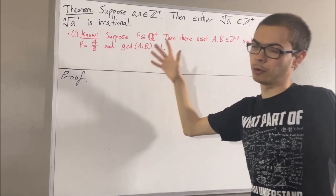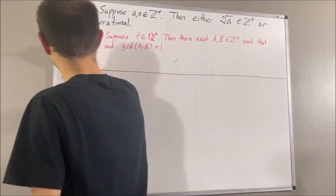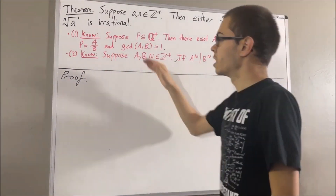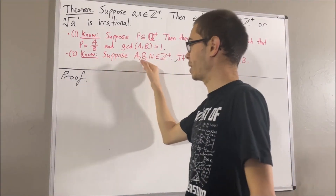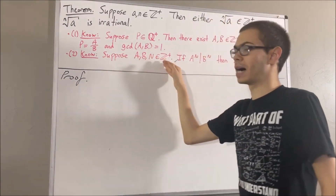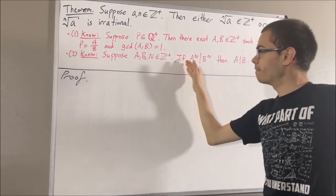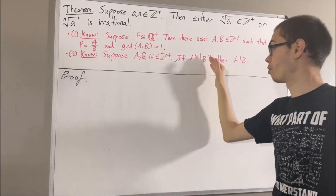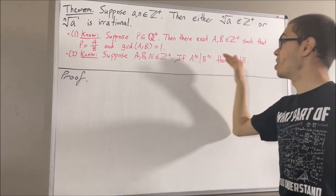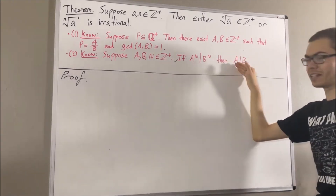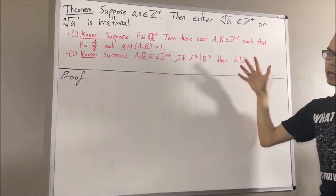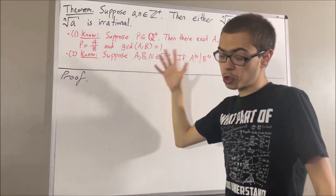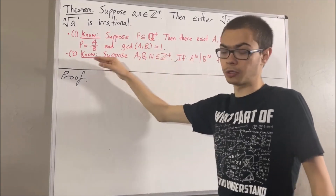Here's the second preliminary result we're going to use. Suppose a, b, and n are positive integers. If a to the power of n is a divisor of b to the power of n, then a is a divisor of b. Now, I'll leave links in the description to proofs of these preliminary results.